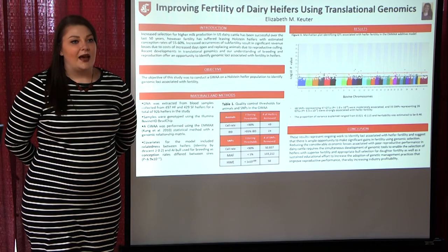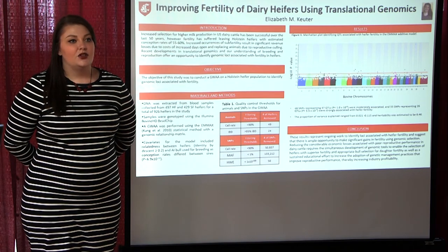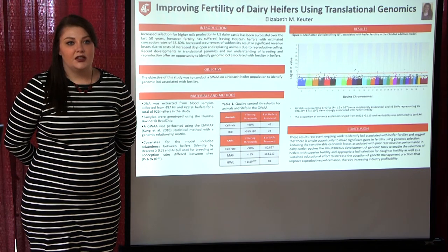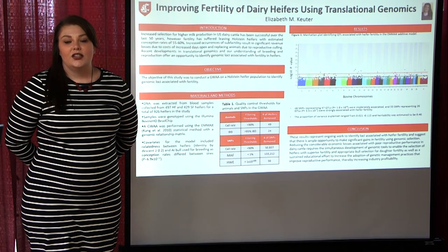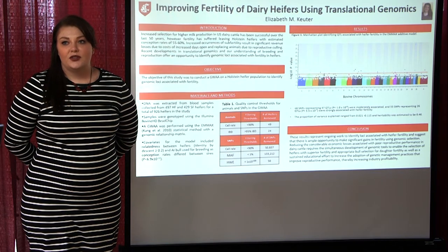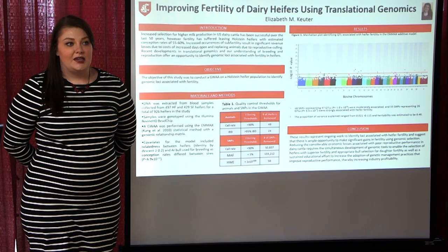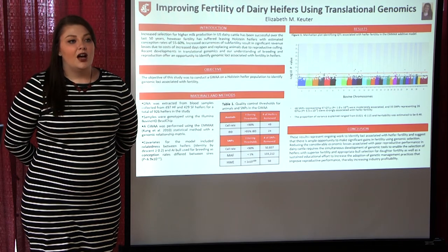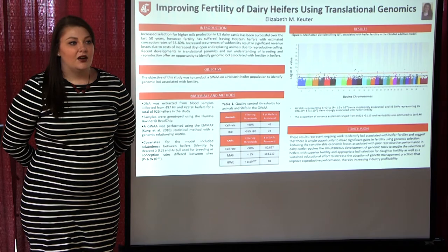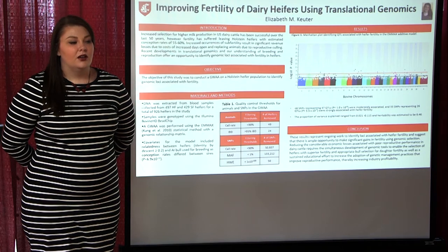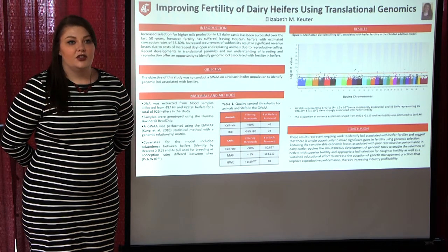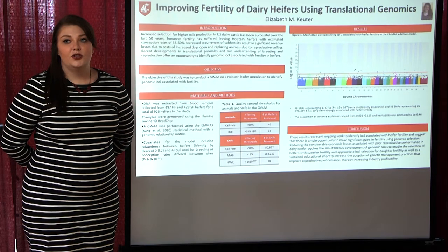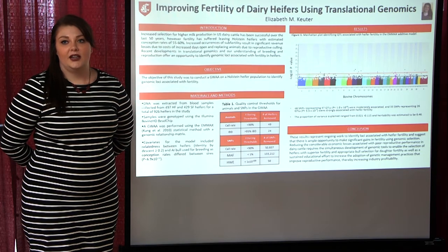One way to combat this is to increase selection for fertility traits like conception rate, and in order to do this, regions of the genome associated with fertility need to be identified. We accomplished this by comparing over 800,000 genotypes of two groups of dairy heifers.